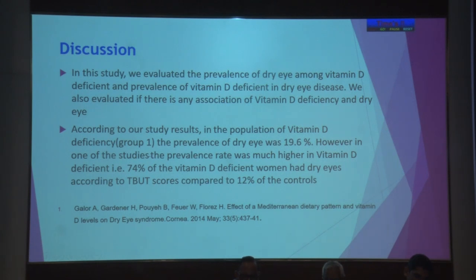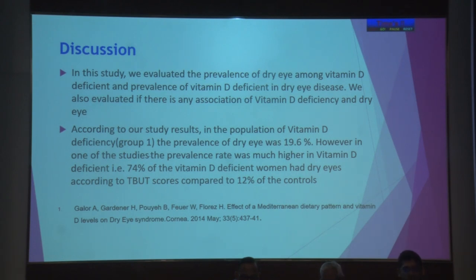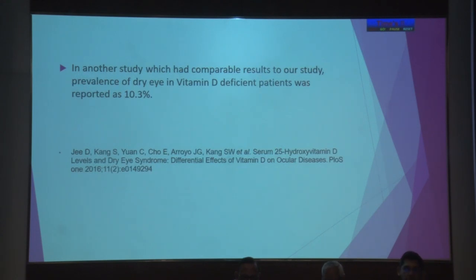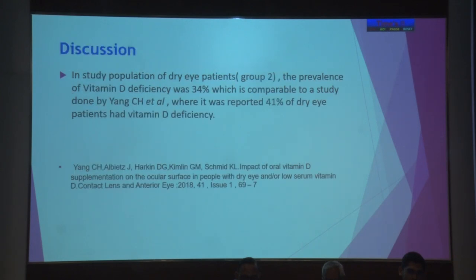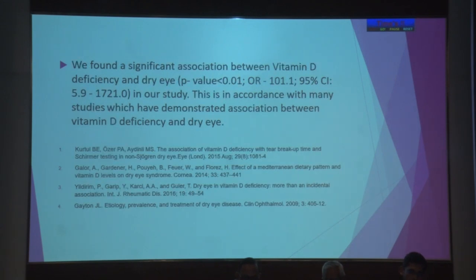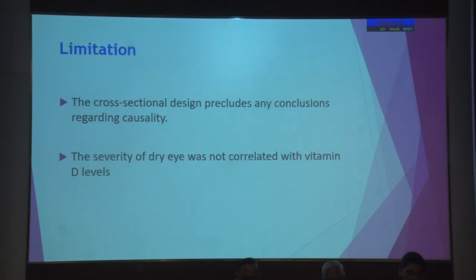In our discussion, the prevalence of dry eye in the vitamin D deficient population was 19.6%. This is lower than some other studies where it came out to be 74%. In another study with comparable results, prevalence was reported at 10.3%. In the dry eye patient group (Group 2), the prevalence of vitamin D deficiency was 34%, comparable to a study by Yang CH et al., where 41% of dry eye patients had vitamin D deficiency. The limitation of this cross-sectional design is that it precludes any conclusion regarding causality, and the severity of dry eye was not correlated with vitamin D levels.